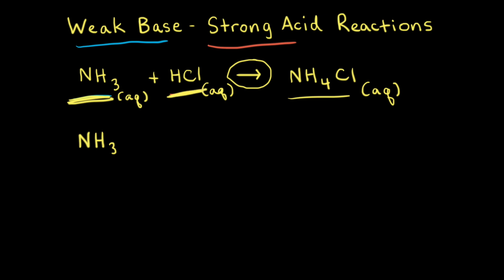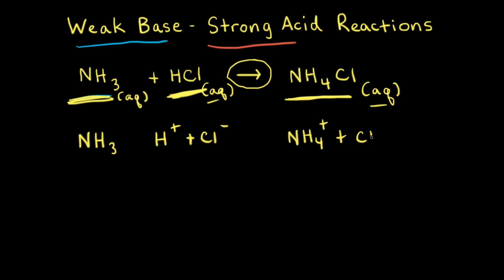However, for hydrochloric acid — a strong acid — it ionizes 100%. Therefore, in aqueous solution, we need to show this as the ions H+ and Cl−. Ammonium chloride is a soluble salt, so in aqueous solution we show it as the ions: the ammonium ion NH4+ and the chloride anion Cl−.